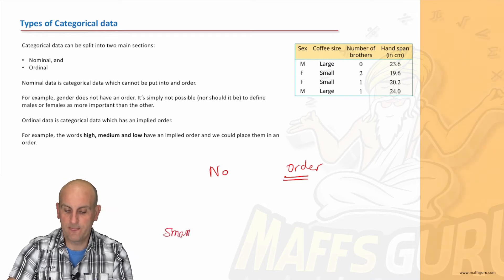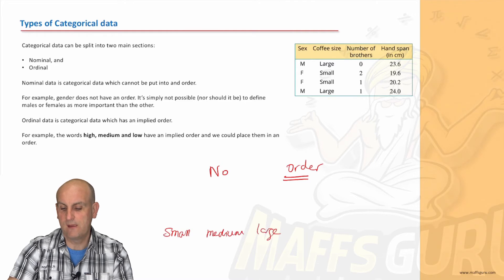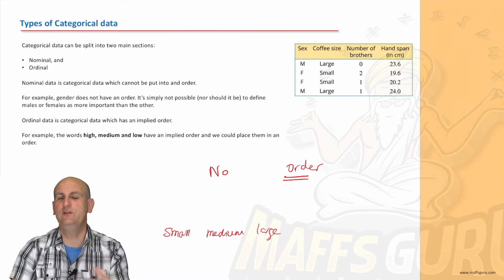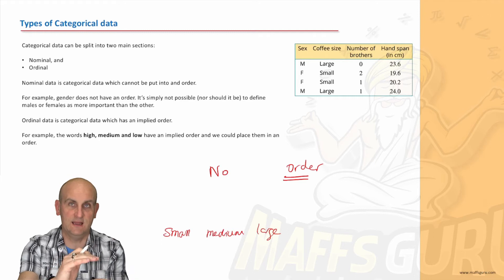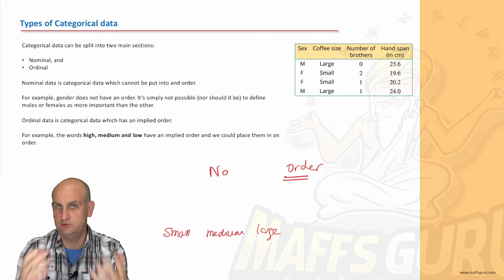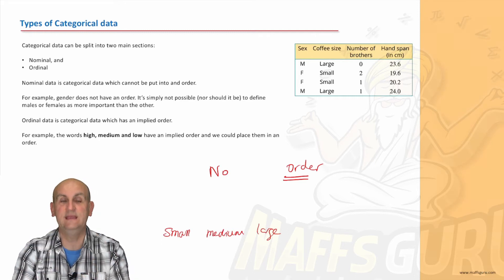So, for example, small, medium, and large. Those words there have an implied order. We've made the English language, and we've given those words some idea of size. So, small, we would know is that. Medium and large, job done. Yes, so that there is ordinal data, something we can put in order.